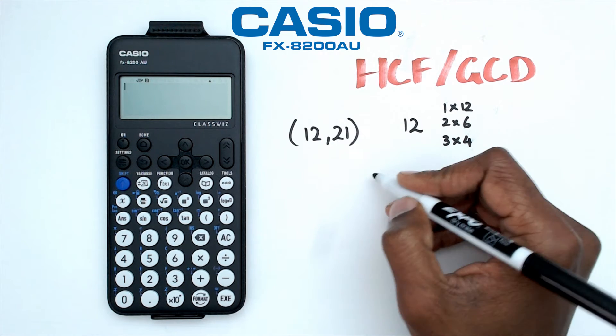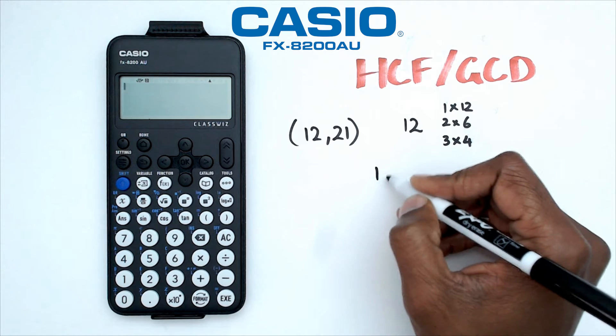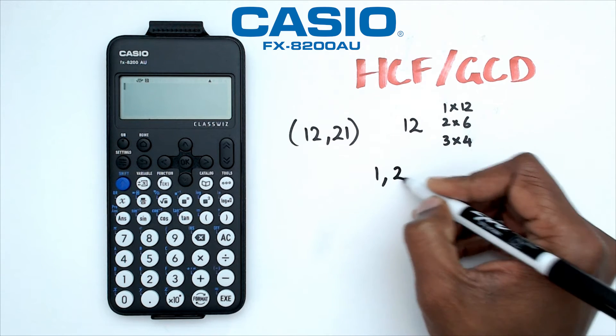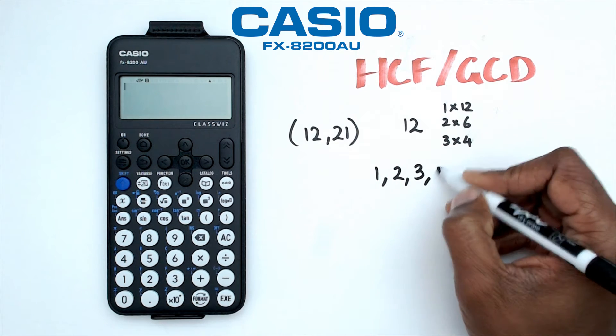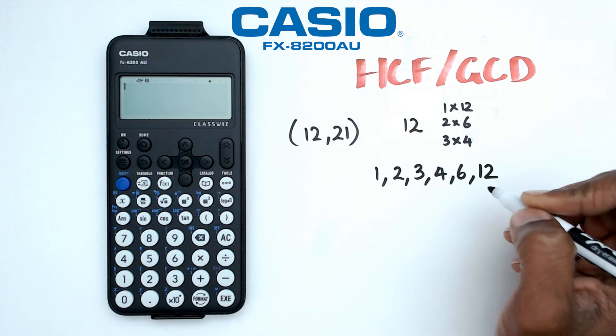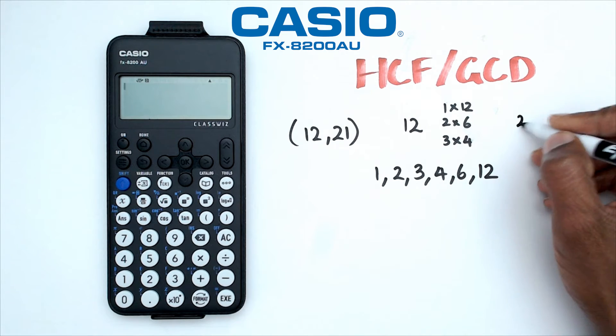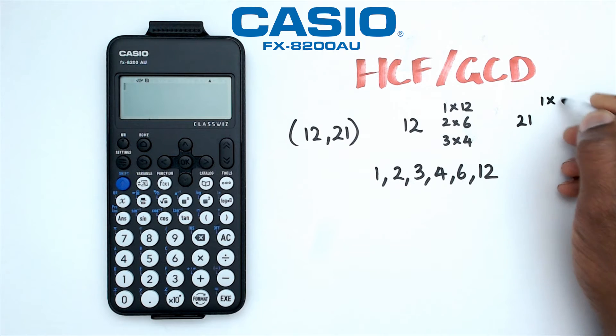So I can say that factors of 12 I've got are 1, 2, 3, 4, 6, and 12. And if I look at factors of 21, I've got 1 times 21, then I've got 3 times 7.